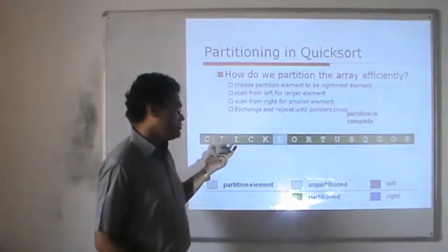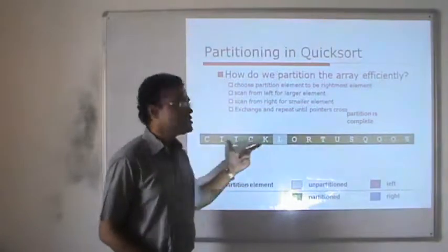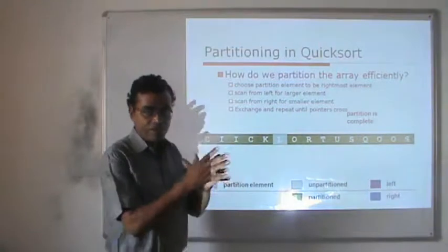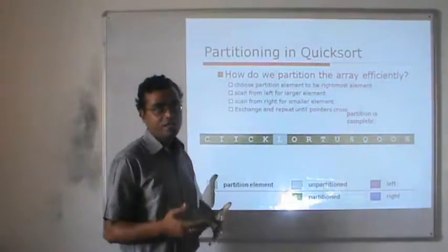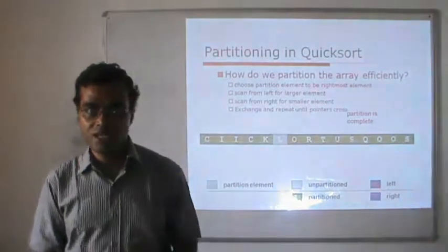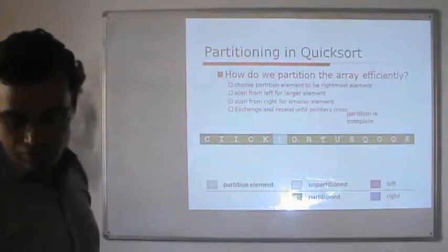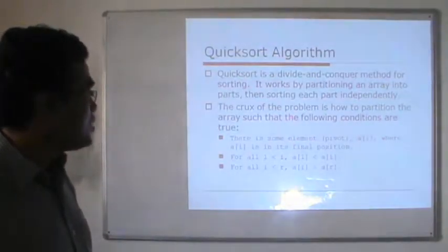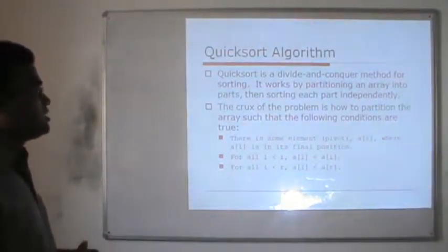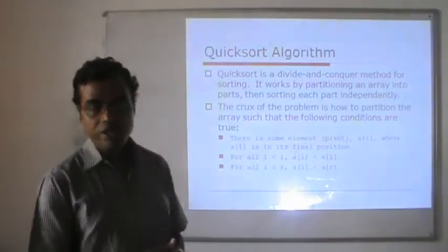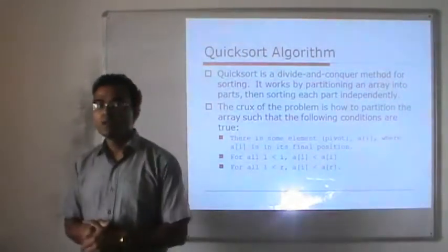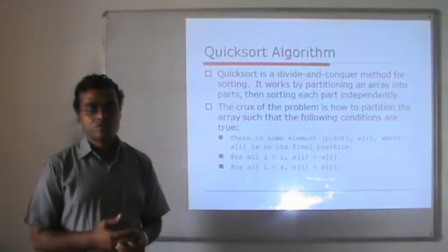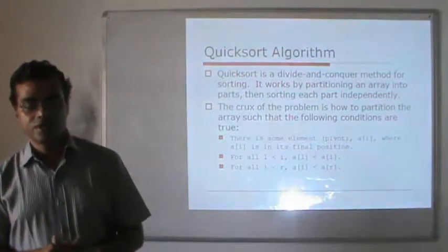These two parts are sorted separately by the same process. Again they divide into two parts, and keep on dividing until we get a single element, which is already in sorted form. So this approach uses the intermediate recursion. The algorithm can be defined as: quicksort uses the divide and conquer method for sorting. It works by partitioning an array into parts, then sorting each part individually and independently.